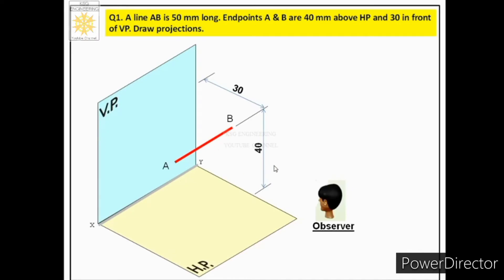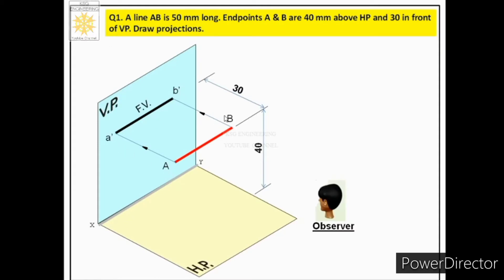To get the front view, rays of sight from the observer's eye strike the two endpoints of the line and project them onto the vertical plane. Connecting those two projected points gives the front view of the line, denoted by small letters a' and b'. As learned in the projections of point chapter, a point labeled capital A has its front view labeled small a'.